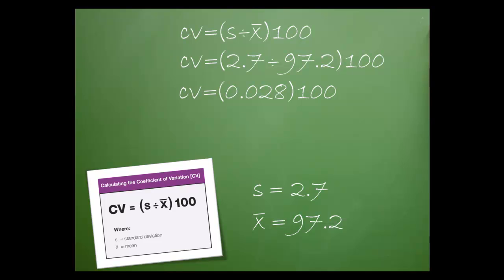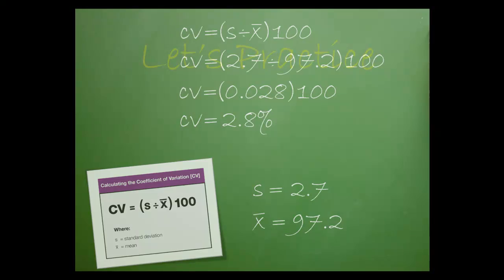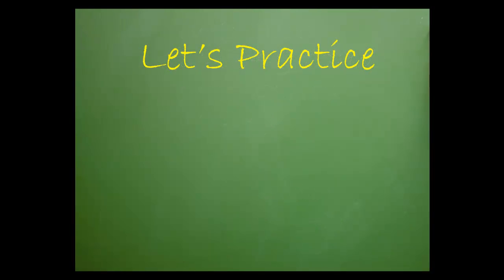Next, we'll divide the SD by the mean. The result is 28 thousandths. Finally, we multiply by 100 in order to have a percentage. Now let's do a little practice.